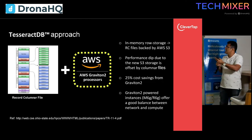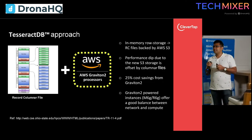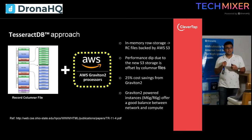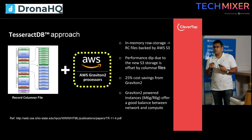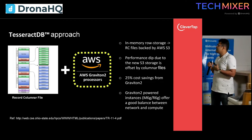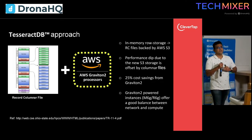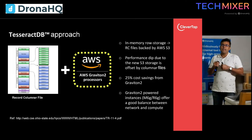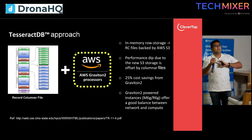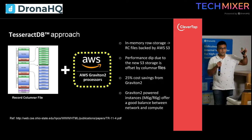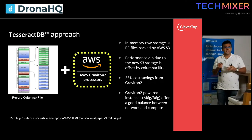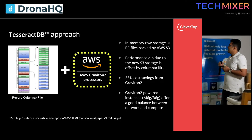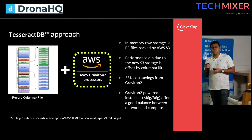We also moved to Graviton processors — ARM-based processors with nearly 25% cost savings compared to Intel-based processors. We faced some adoption challenges with Graviton around kernels and the JVM, which we solved with Amazon's help. They offered a good balance between cost and network performance.